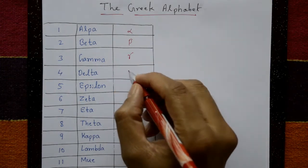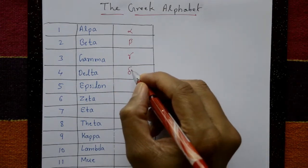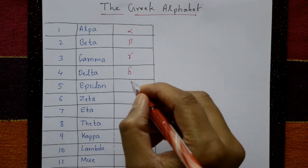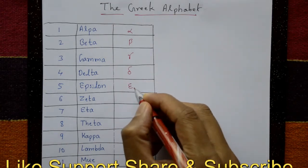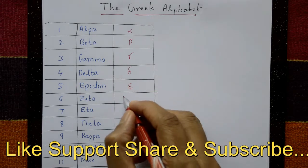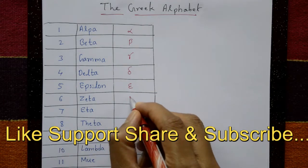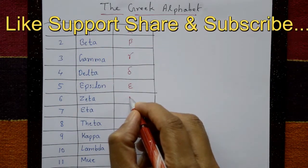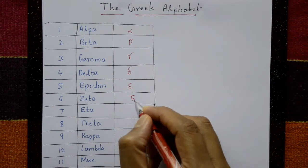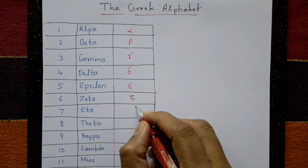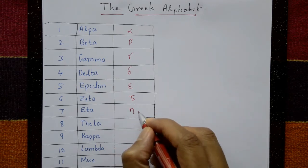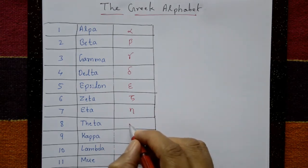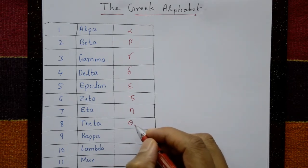The fourth one is delta. The fifth one is epsilon — this is epsilon. And this one is zeta — zeta is a symbol like this. And eta — eta is like this. And theta — you know the theta symbol.